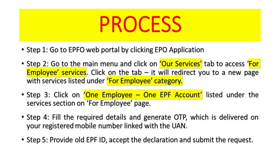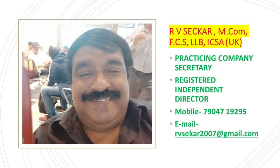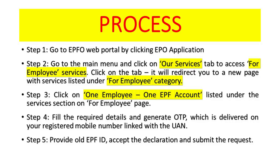Step 1: Go to the EPFO website. Step 2: Go to the main menu and click on the 'Our Services' tab to access employee services, which will redirect you to a new page with services listed under the 'For Employee' category. Step 3: Click on 'One Employee, One EPF Account' listed under the services section. Step 4: Fill in the required details and generate an OTP delivered to your registered mobile number linked with the UAN. Step 5: Provide the old EPF ID, accept the declaration, and submit the request.